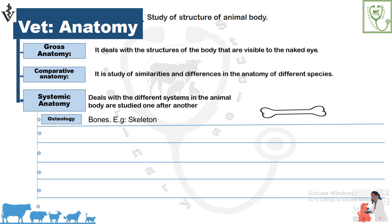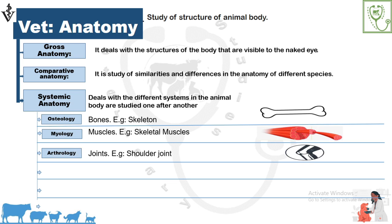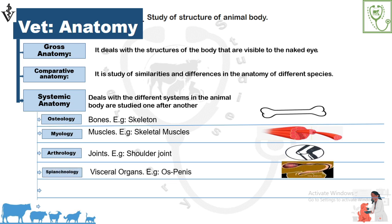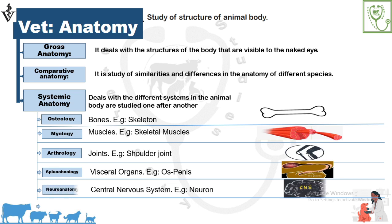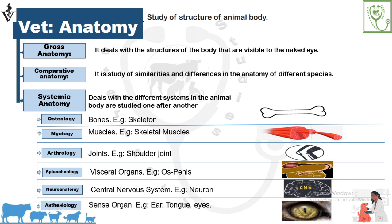Osteology: the study of bones. Myology: the study of muscles. Arthrology: the study of joints. Splachnology: the study of visceral organs. Neuroanatomy: the study of the anatomy of the central nervous system. Esthesiology: the study of sense organs such as the ear, tongue, and eyes.